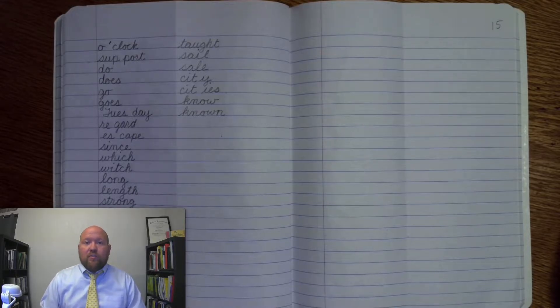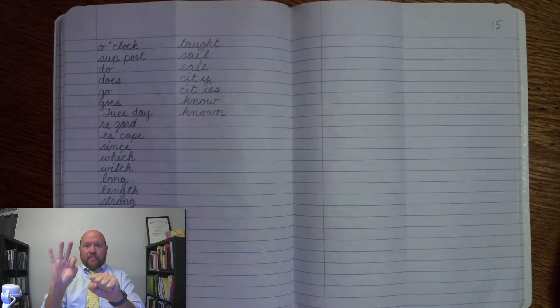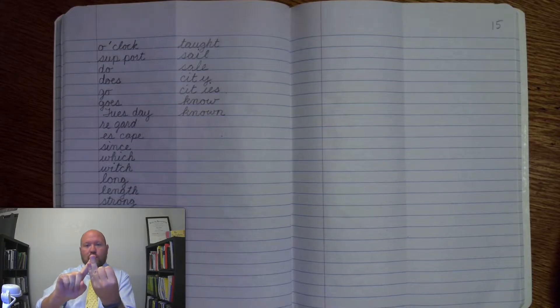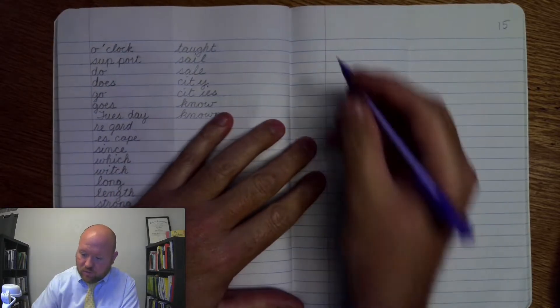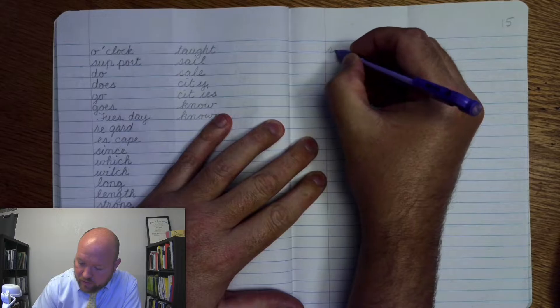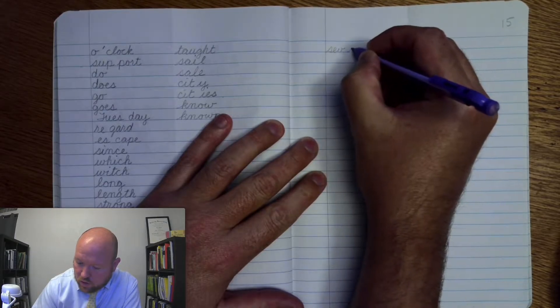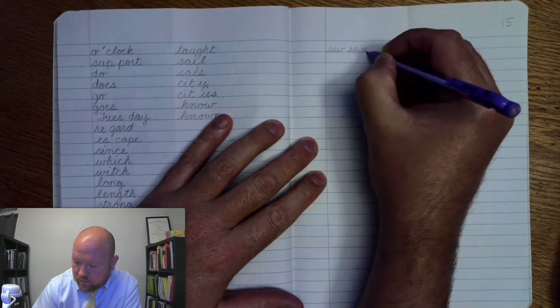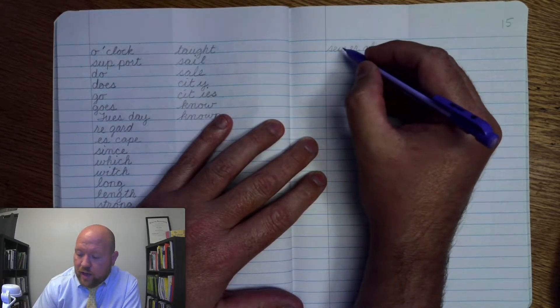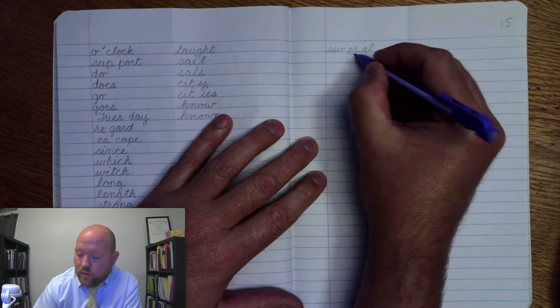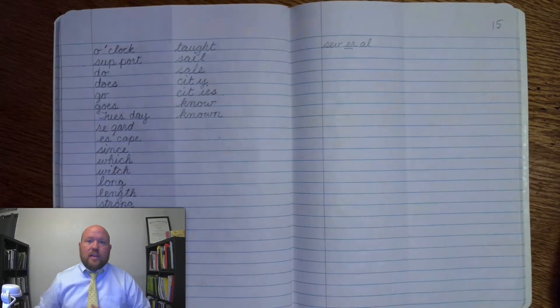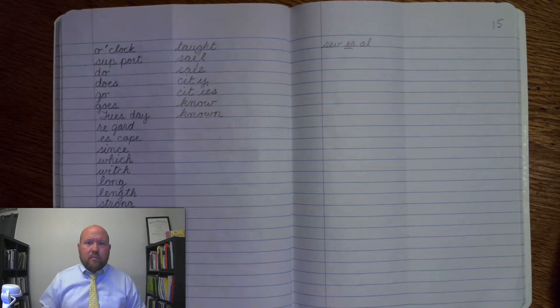Let's go ahead and begin with our first word, and it is the word several. Several. Sev-er-al. S-e-v-er-al. And this is the er of her. Several. Sev-er-al. Markings: S-e-v-er, once, a-l. Several. And several means like multiple of something.